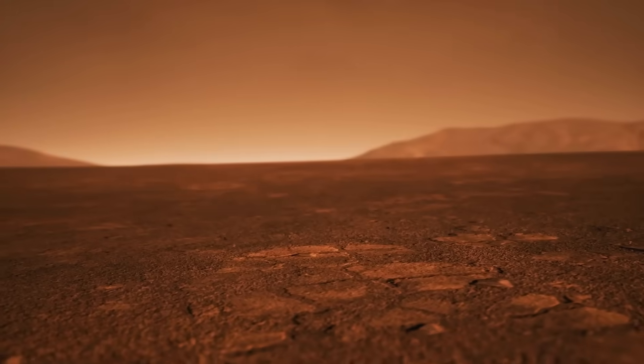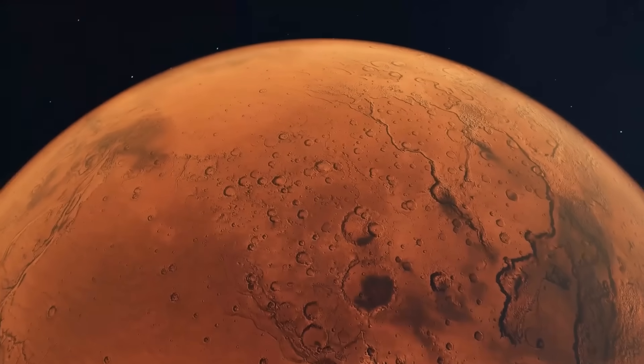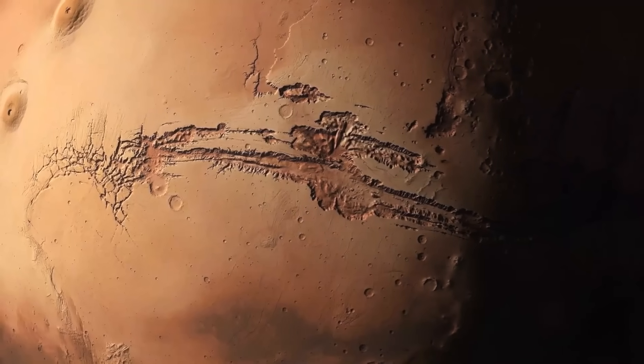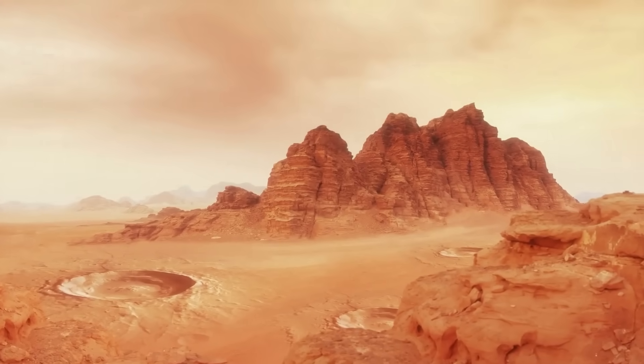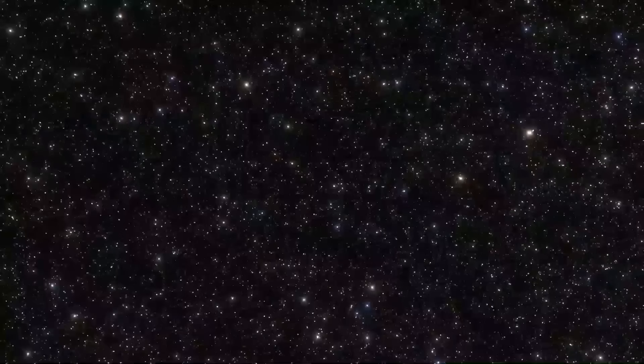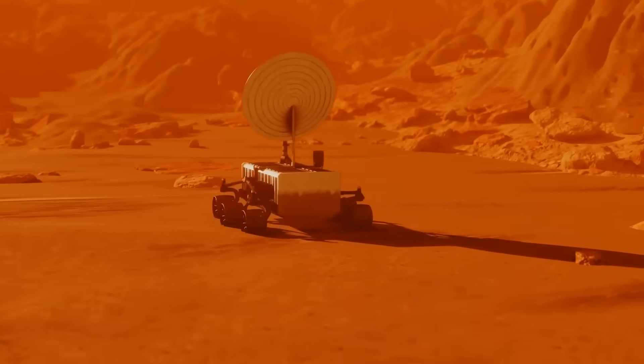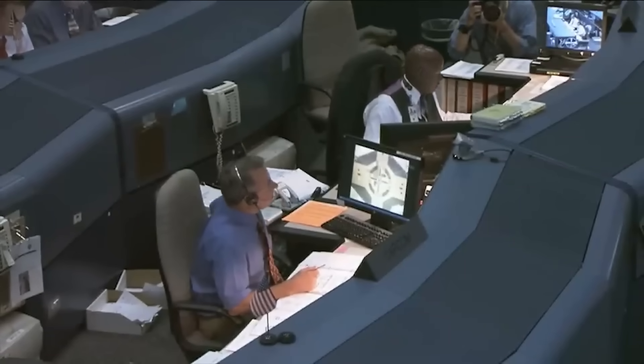As this material rains back down, it will form a vast ejecta blanket, a layer of fresh debris covering thousands of square miles. The most shocking fact is that this ejecta could contain materials from deep within the Martian crust, minerals and potentially frozen brines that haven't seen the light of day for billions of years. For future Martian explorers, this debris field would be an incredible scientific treasure trove.